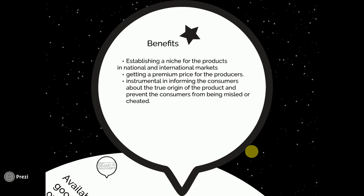Benefits of Geographical Indication. It helps in establishing a niche for the products in national and international markets, because when people are able to find out that a particular product is from the basic origin place, they think that this must be a product which will have the natural features present in the environment. Then, getting a premium price for the producer — if a product has received a GI, it helps the producer get a premium price, as the price quoted to the original producers will always be above the average market price.